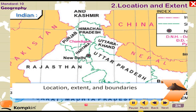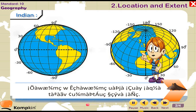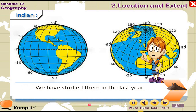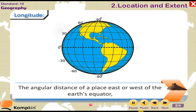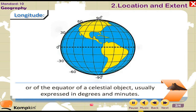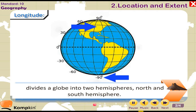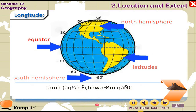Name of the country: Republic of India. Name of the capital: New Delhi. Location, extent, and boundaries: India is located in the northern and eastern hemispheres of the Earth. To understand this, we take help of latitude and longitude, which we studied last year. Latitude is the angular distance of a place east or west of the equator, usually expressed in degrees and minutes. The equator is at zero degrees and divides the globe into the north and south hemispheres.